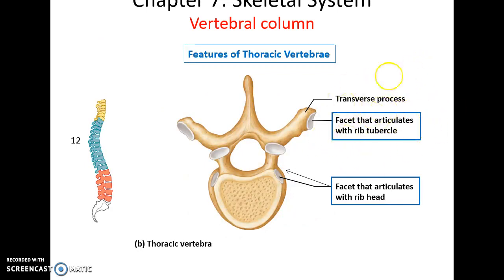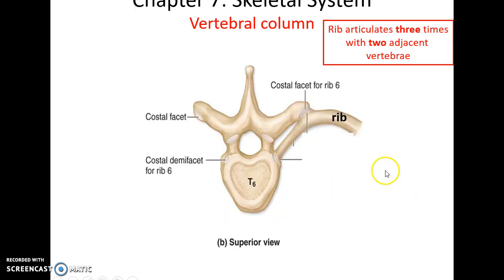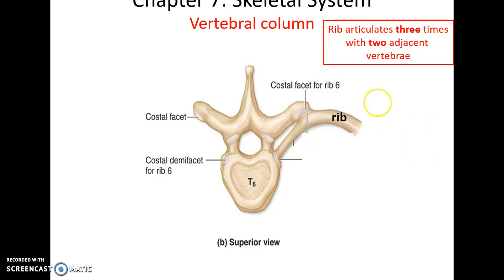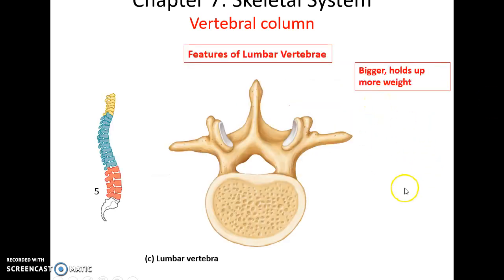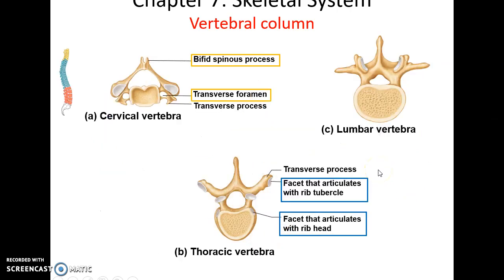Thoracic vertebrae have extra facets where they articulate with the ribs — both on their transverse processes and on their bodies. One rib articulates at three places with two different vertebrae. Lumbar vertebrae are simply large, and that size difference helps you identify the three types of vertebrae.